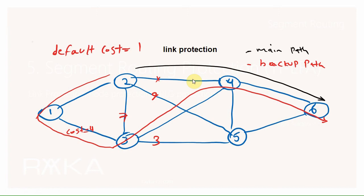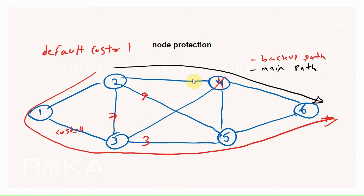You may ask yourself why we don't implement this type of protection in an IP network. Because in an IP network, this method may cause a loop. In a few minutes, at the end of this video, you will get the answer to this question. What is node protection?